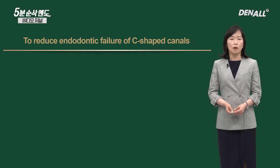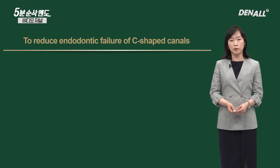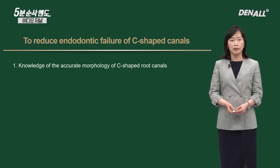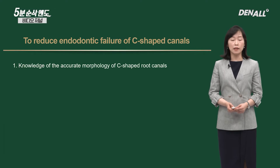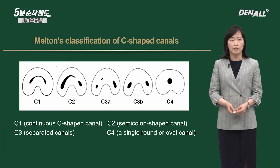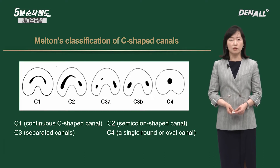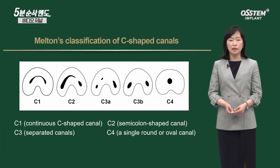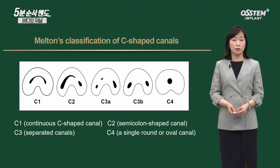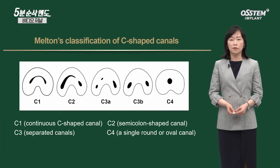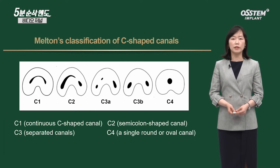When we do C-shaped root canal treatment, how can we increase the percentage of success? We need to understand C-shape accurately first. This is Melton's classification. C1 is a continuous C-shaped canal. C2 is a semi-colon-shaped canal. C3 is a separated canal. C4 is a single round or oval canal.